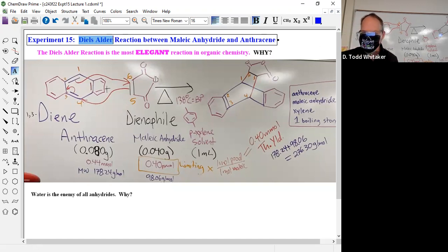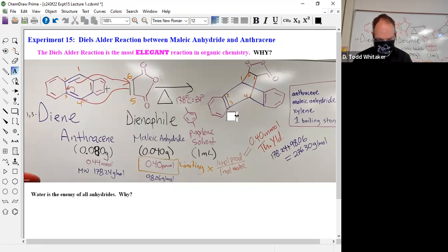Maleic anhydride is this species here, anthracene is this species here. It has nothing to do with anthrax. And this product here is called anthracene maleic anhydride.